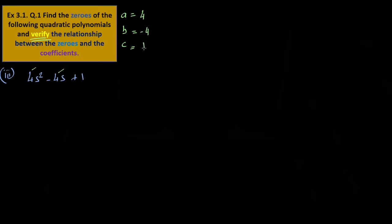Zeros — like and split. It's going to be 4. You can multiply 4 into 1, that's 4. Positive. You can split.